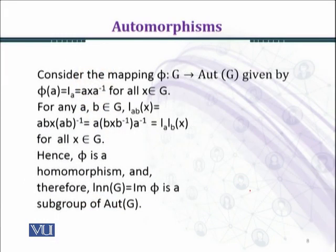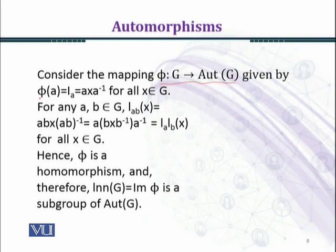Now we prove the remaining part of the theorem. Consider the mapping φ from G to Aut(G) given by φ(a) = I_a, where I_a is the inner automorphism defined as I_a(x) = axa⁻¹ for all x belonging to G.